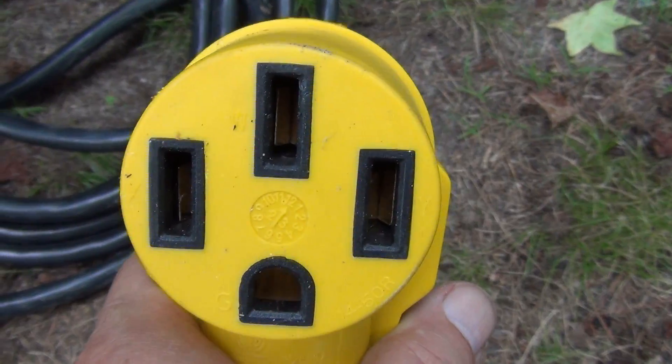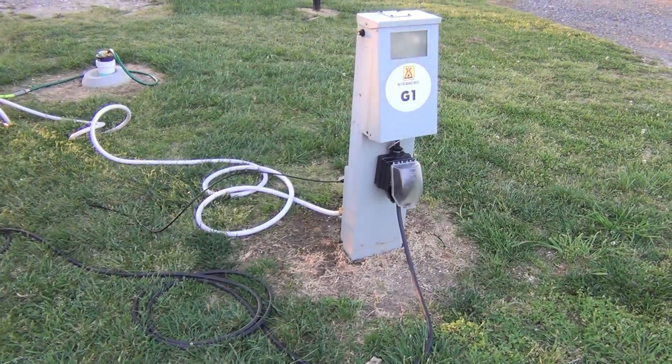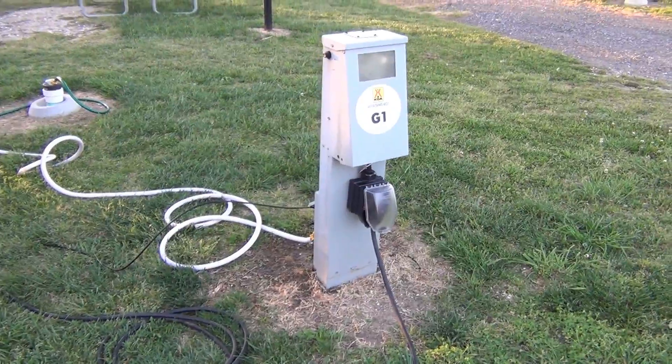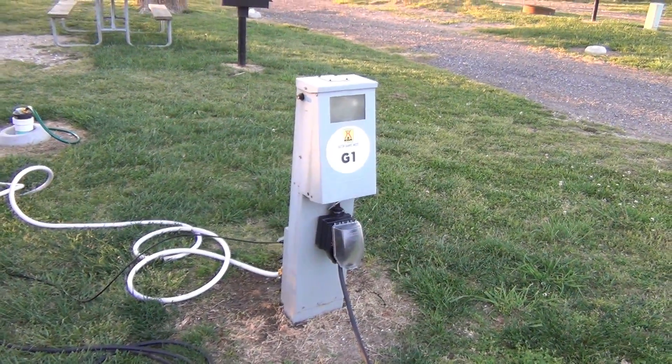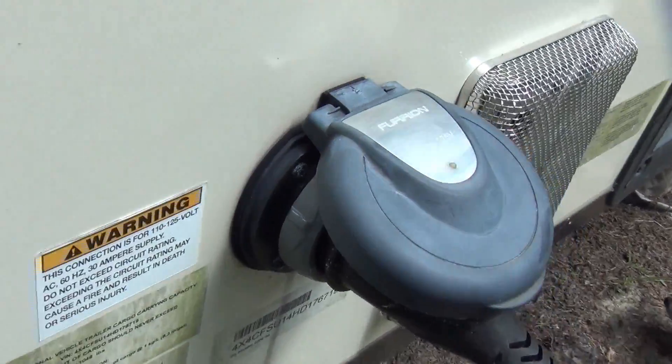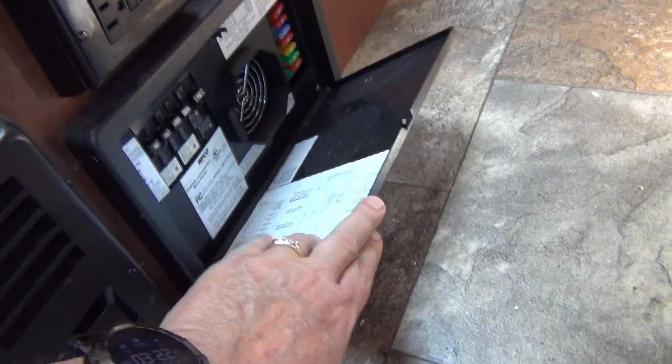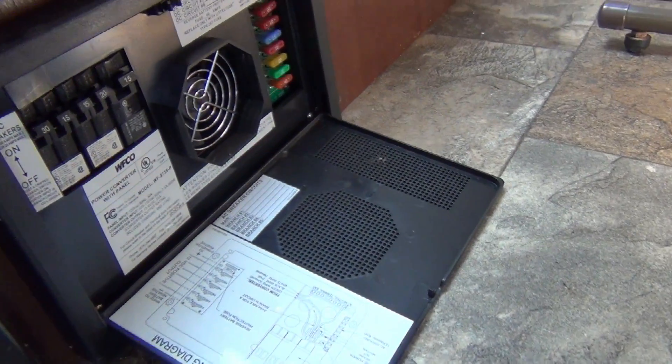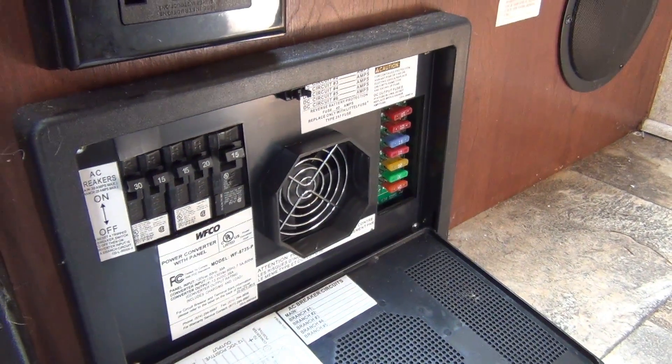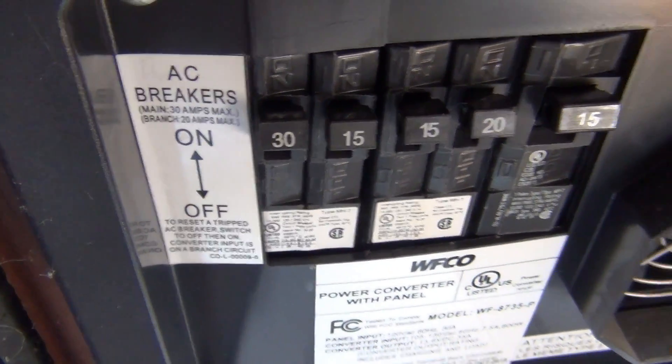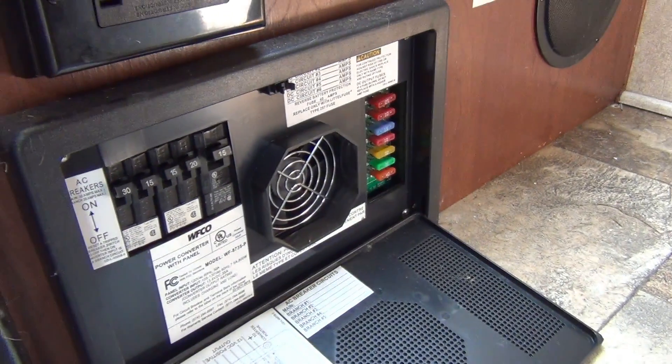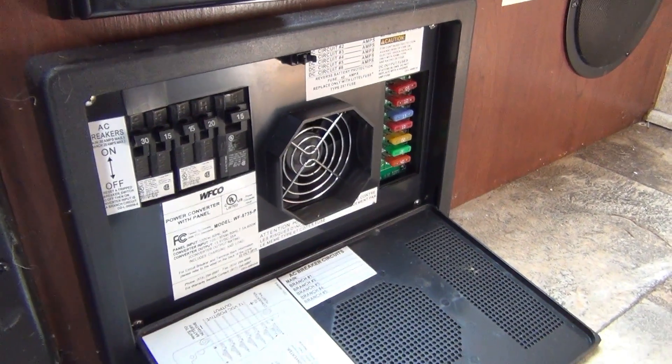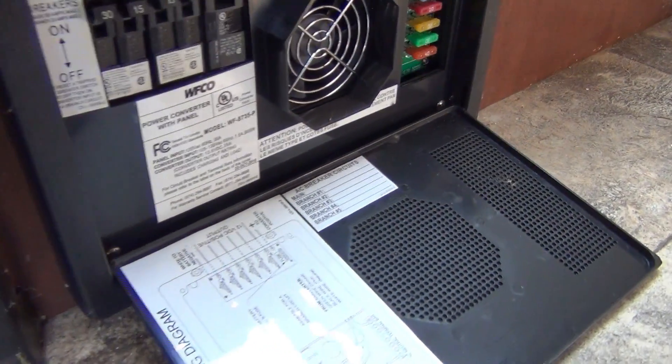A lot of people think that by using a dog bone adapter and plugging in their 30 amp camper into a 50 amp socket, they can cheat the system. Sorry, it doesn't work like that. If your camper is wired for 30 amps or 3,600 watts maximum, and if you exceed that, you will trip your camper's breaker. You can't do anything about this, but the RV manufacturer can. They can build campers with 50 amp systems. Let's see what that does.